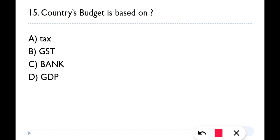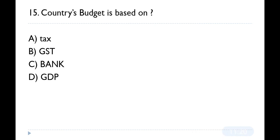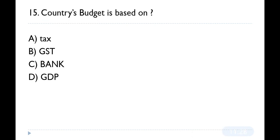Question number fifteen: A country's budget is based on what? Options are Tax, GST, Bank, or GDP. The correct answer is option D — GDP, Gross Domestic Product.